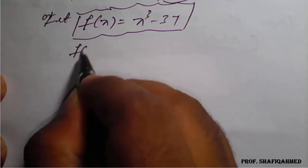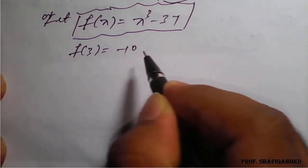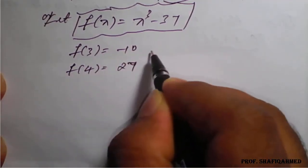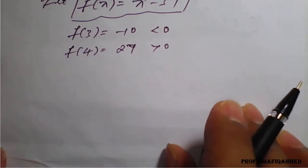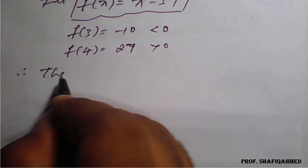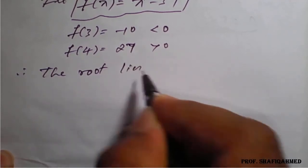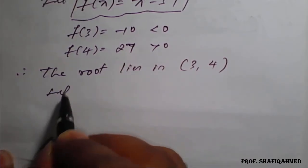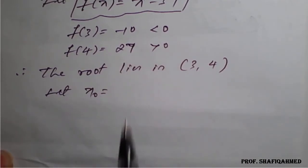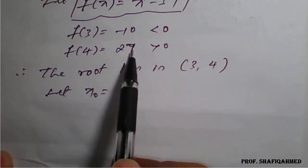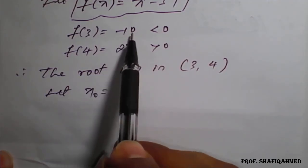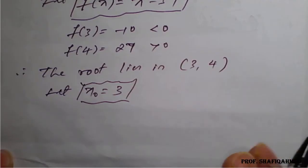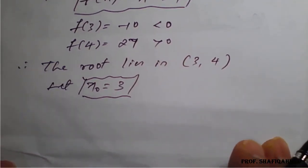So f(3) equals minus 10 and f(4) equals 27. This is a negative value and a positive value, therefore the root lies in the interval [3, 4]. To decide x₀: since 10 is nearer to 0 than 27, and 10 comes from x equals 3, we take x₀ equals 3. So we will get an answer something like 3 point something.